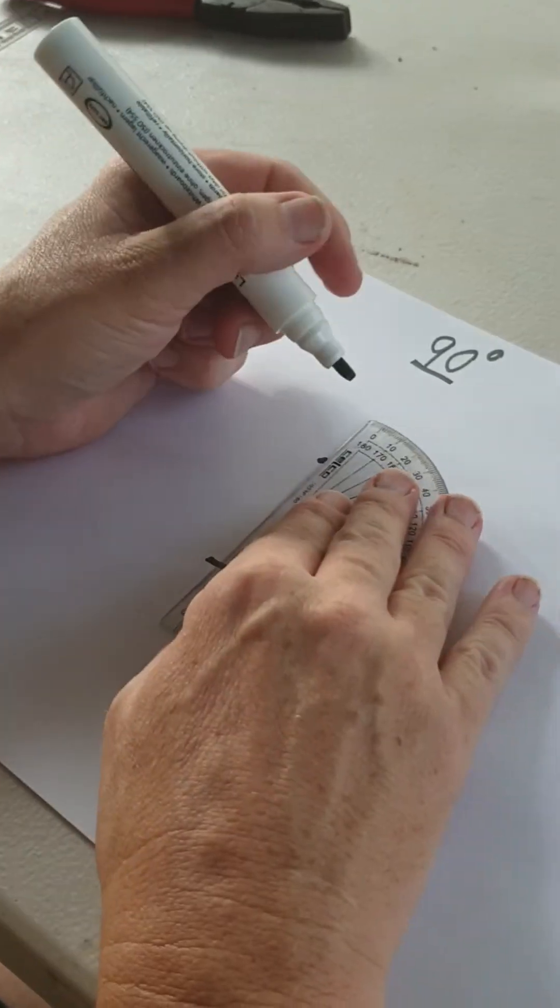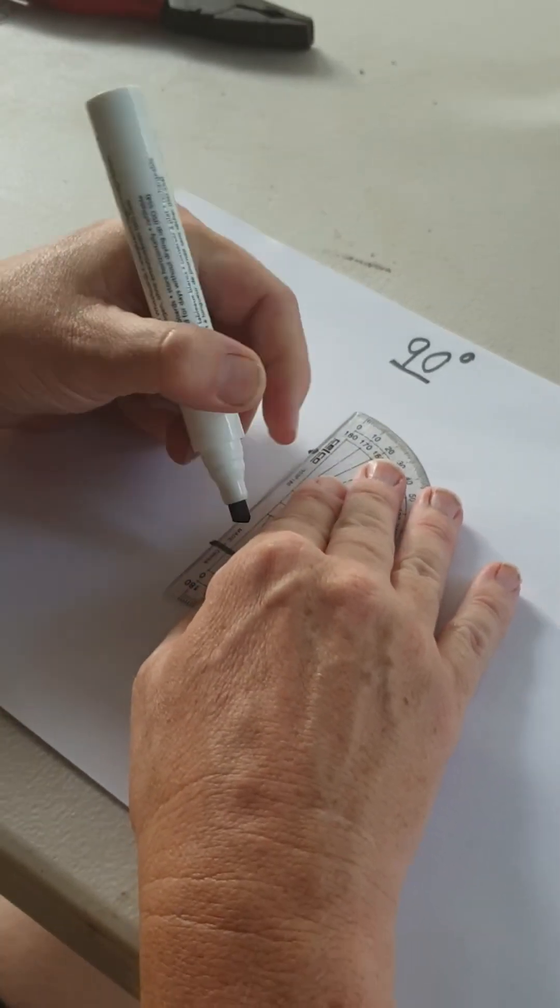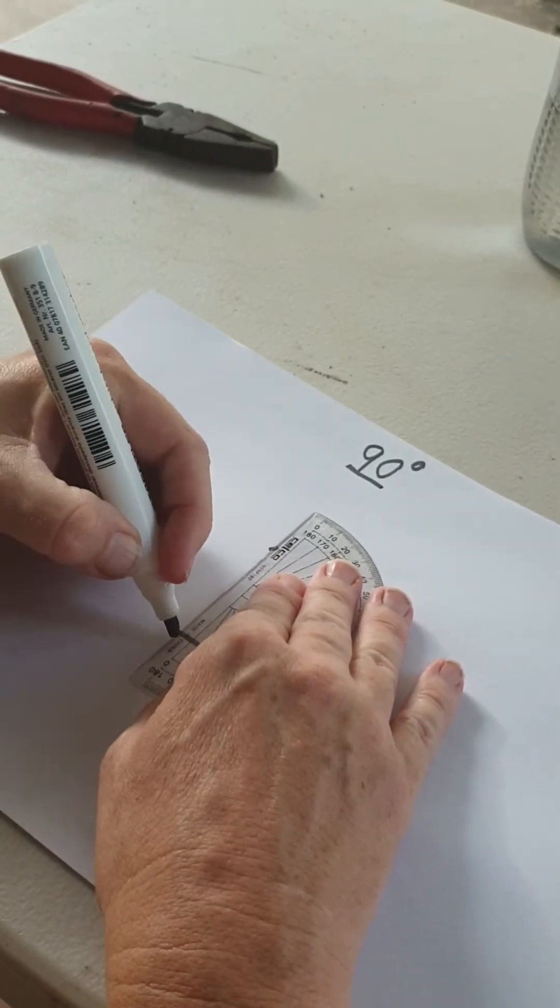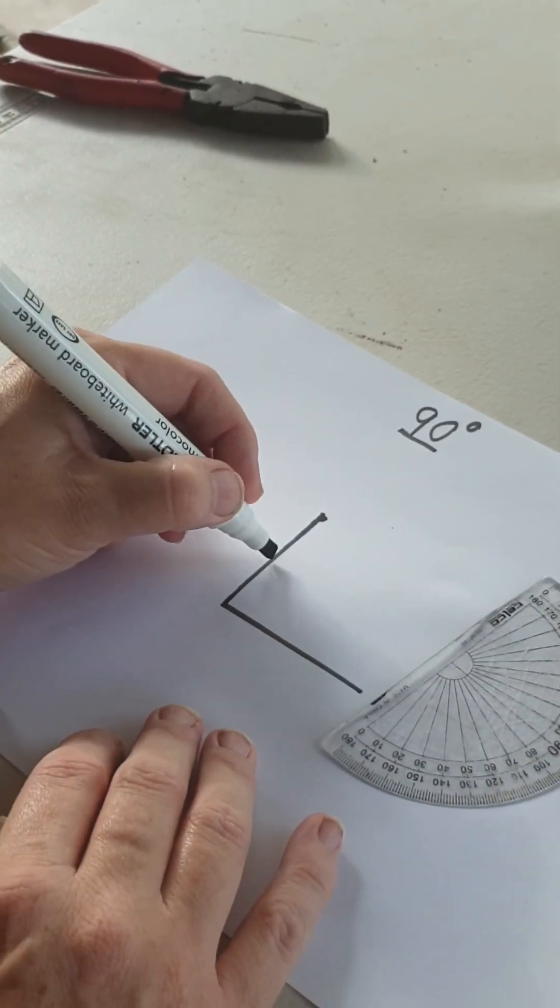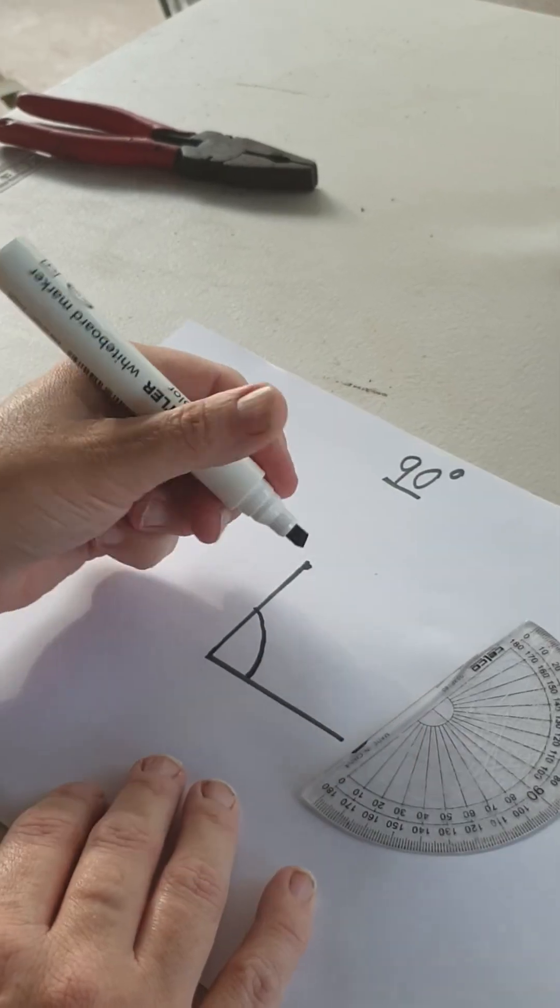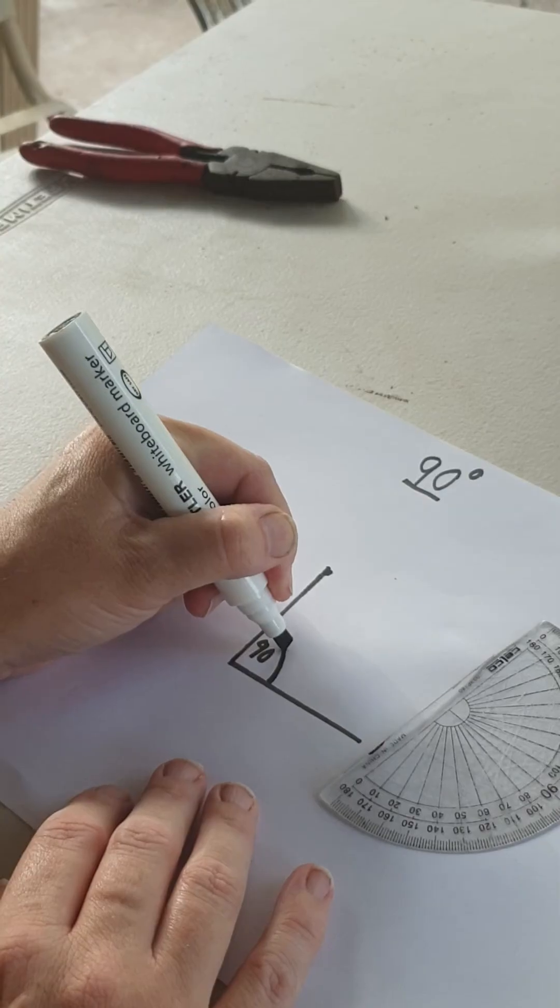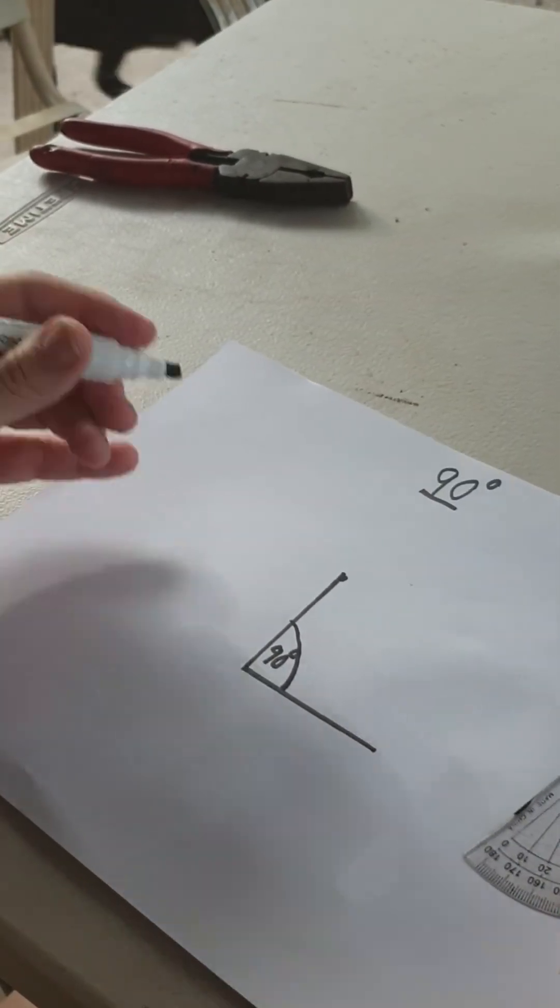Get your protractor as a ruler and just draw a line. Then you can just do a little curved line here and that is your 90 degrees. And that's it.